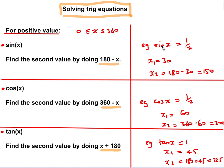For solving trig equations with positive values — like sin x = 1/2, cos x = 1/2, tan x = 1 — I recommend learning the rules. For sine: get the first answer from your calculator, then the second value is 180 minus that answer. For example, sin x = 1/2 gives 30°, second answer is 180 - 30 = 150°. For cos: the rule is 360 minus that answer, so cos x = 1/2 gives 60°, second value is 300°. For tan: just add 180, so tan x = 1 gives 45°, second answer is 225°.